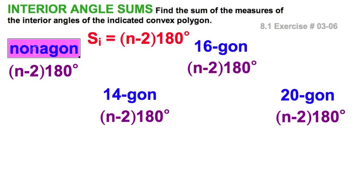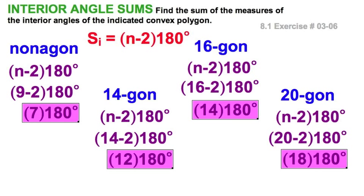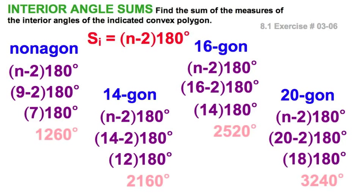If the sum of the interior angles obeys this formula, let's find these four right here. Remember, nonagon is nine sides. The rest of them are pretty obvious. And we'll just do the substitution, the subtraction, and the multiplication. That's it.